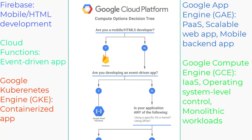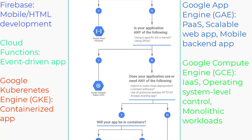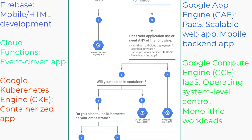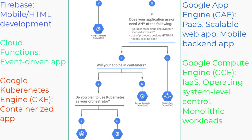If the application has specific requirements such as a specific OS, kernel, or GCP access, or it requires you to lift and shift from on-premise to public, hybrid, or multi-cloud deployments, or involves monolithic workloads or use of protocols besides HTTPS, then you should use Google Compute Engine (GCE). If you plan to use Kubernetes as an orchestrator or the app needs containerization, then choose Kubernetes Engine (GKE).